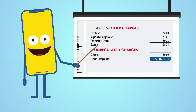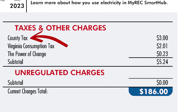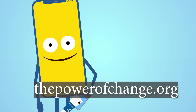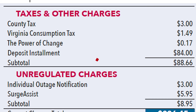Now let's take a look at taxes and other charges. The county tax is levied by the county you live in. The Virginia consumption tax is a state tax that is regulated by the Commonwealth. This is also the area where you might see charges for programs you enroll in, such as the Power of Change, which lets you round up your electric bill each month to support local nonprofits. You can learn more about this neat program at thepowerofchange.org.